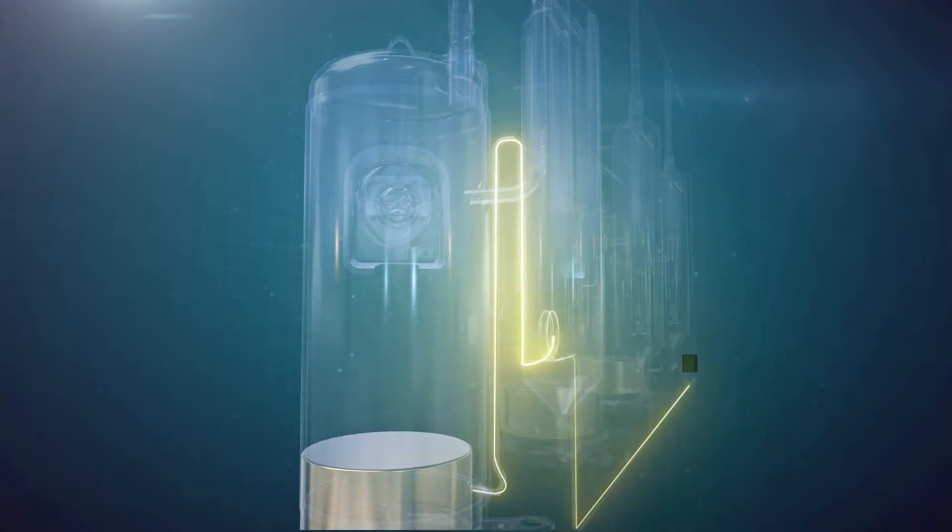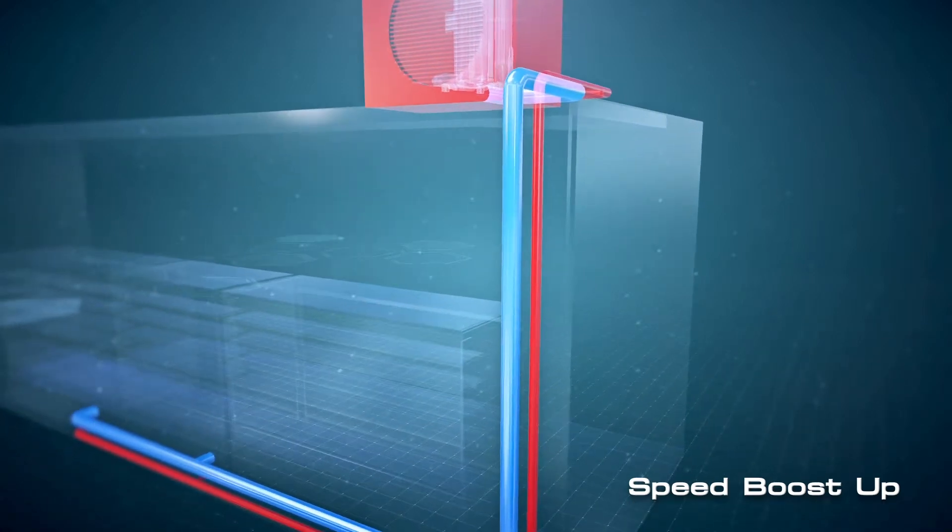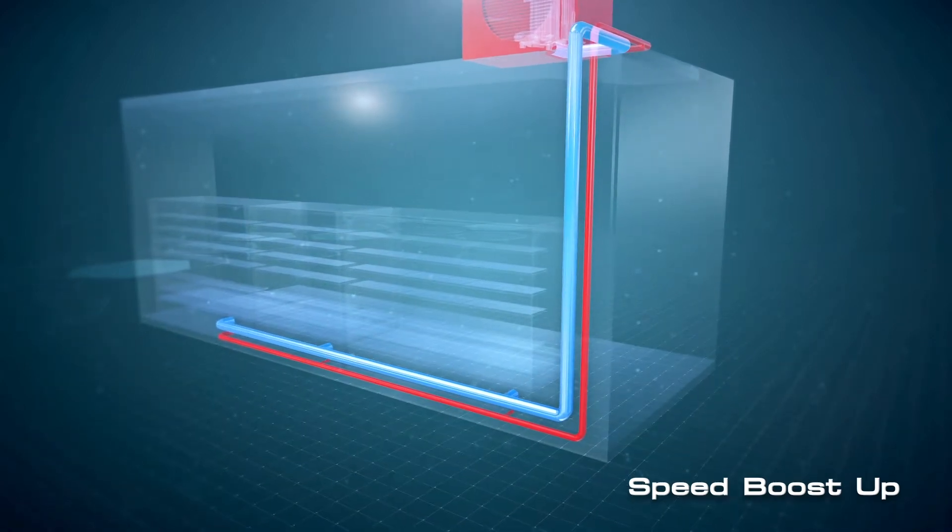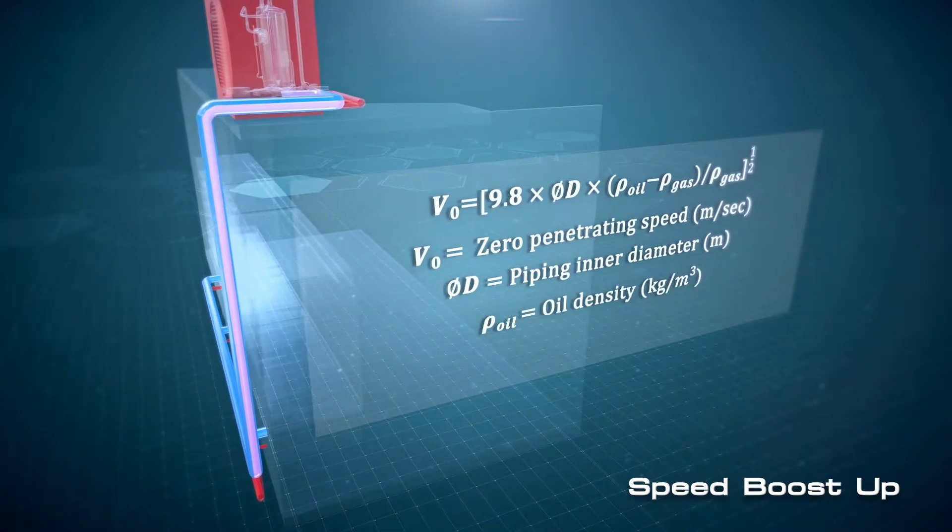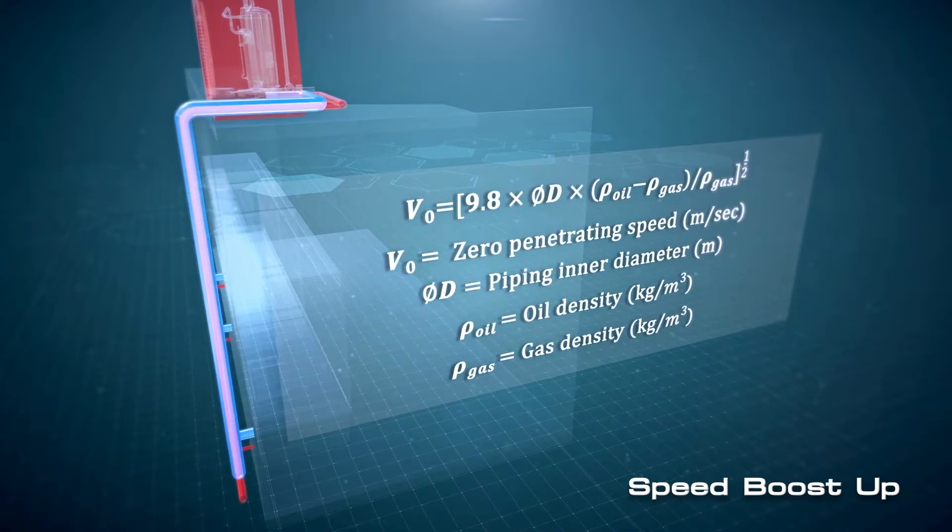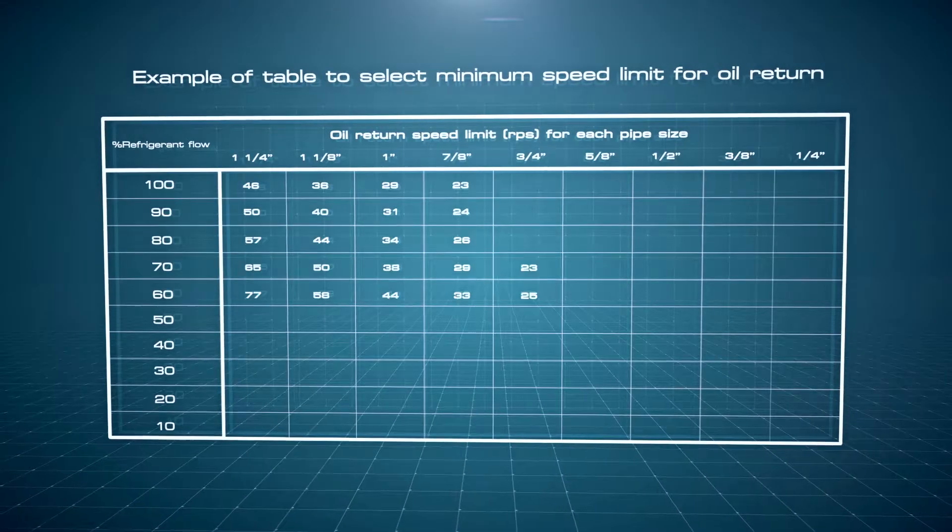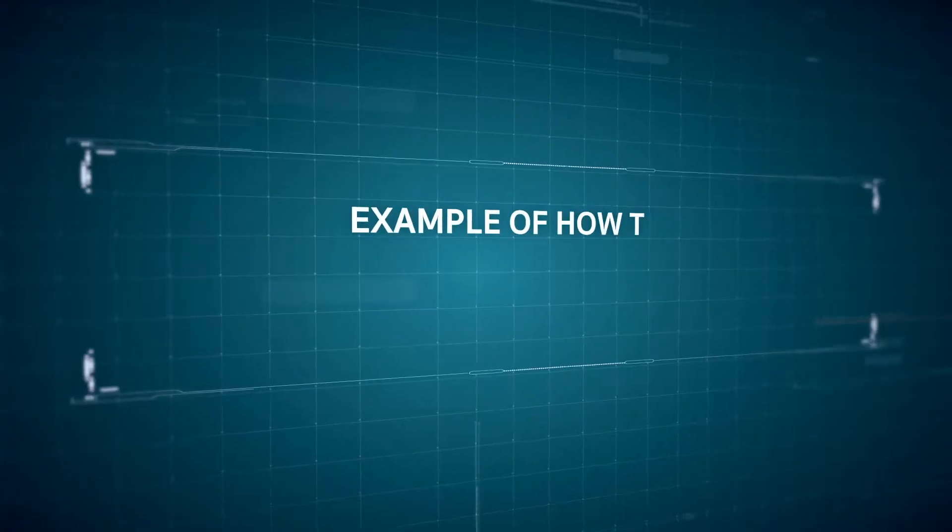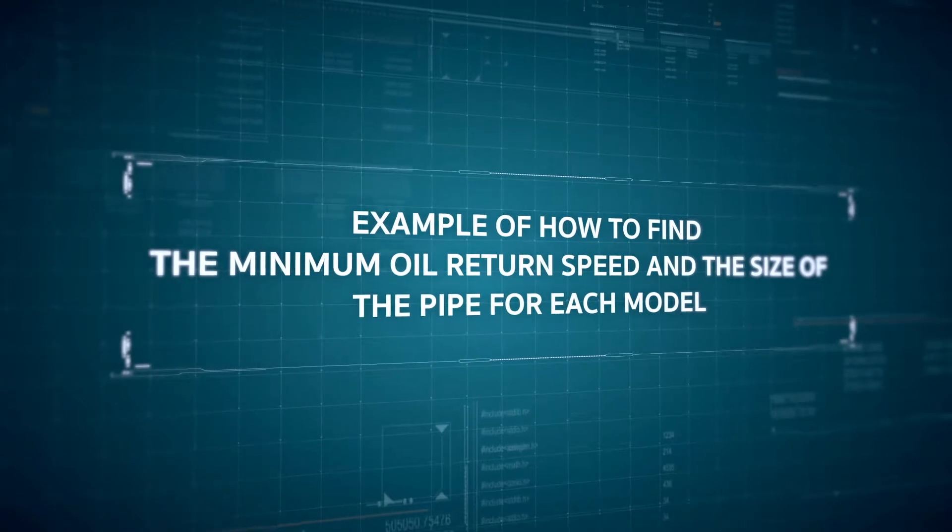The speed boost up technique is utilized in vertical piping, where the compressors are above the evaporators. The minimum oil return speed depends on the size of the pipe. That is, larger pipes require higher maximum oil return speed. The equation for calculating the minimum oil return speed, given the size of the pipe, is as shown. According to the equation, here is the list of minimum oil return speed of each compressor model, and here is an example of how to find the minimum oil return speed and the size of the pipe for each model.